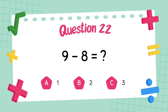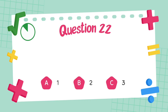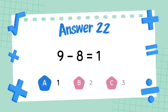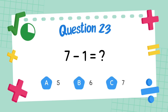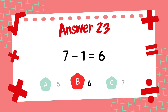What is nine minus eight? The answer is one. What is seven minus one? The answer is six.